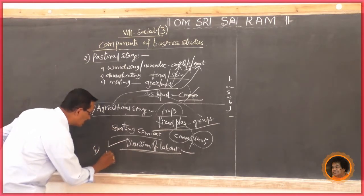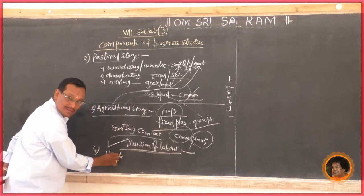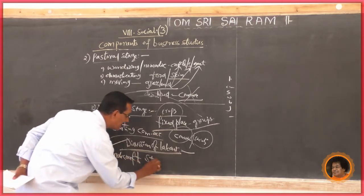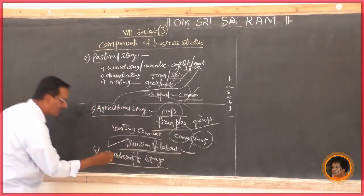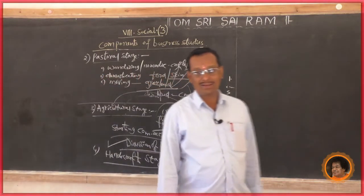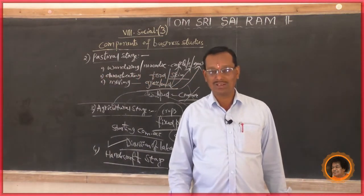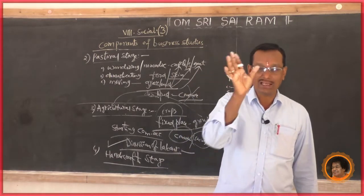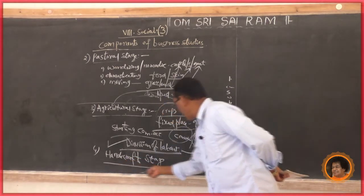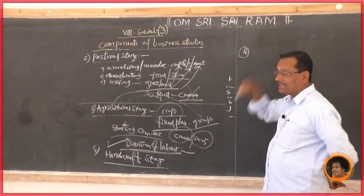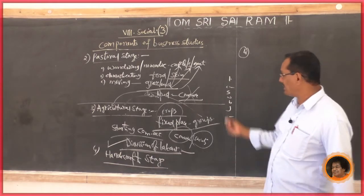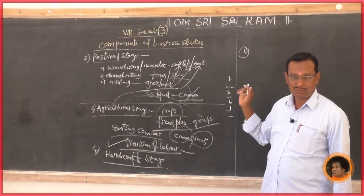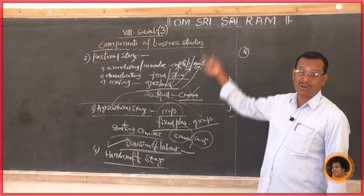The fourth stage is the handicraft stage. Handmade goods — tools and materials — that is the handicraft stage. In the agricultural stage, the main occupation of human beings was agriculture, and for agriculture, people needed certain tools.